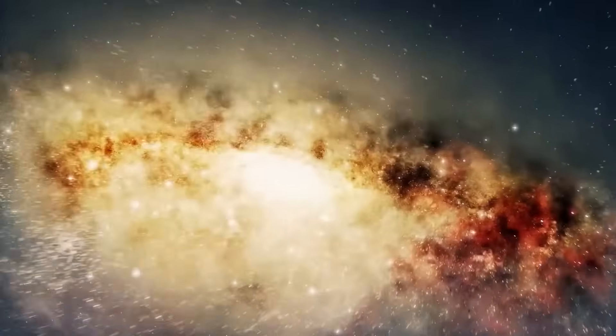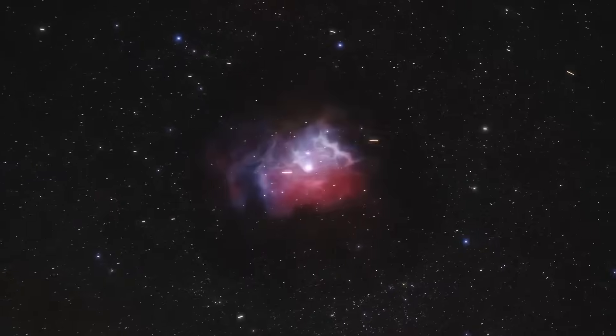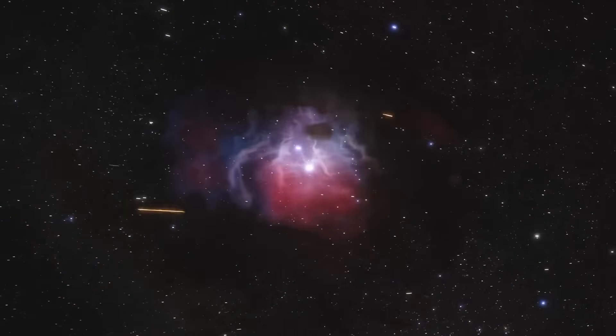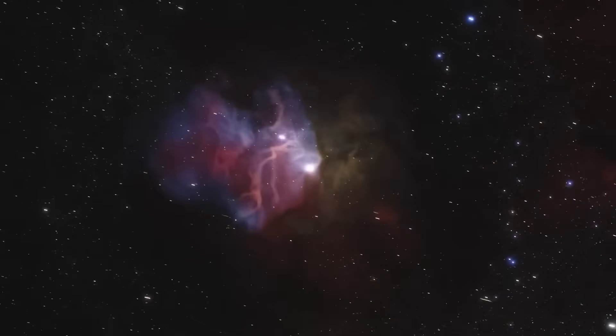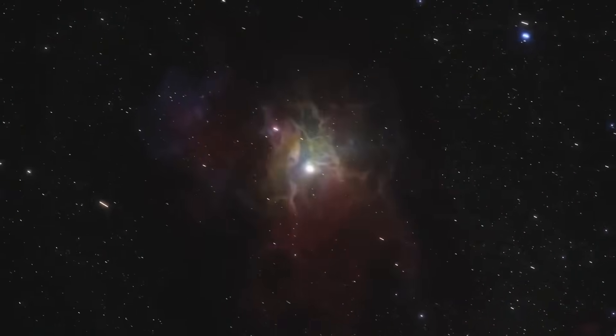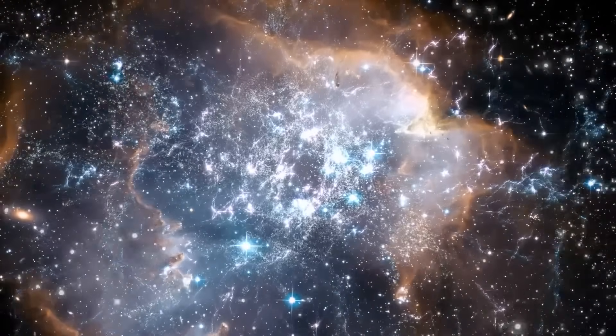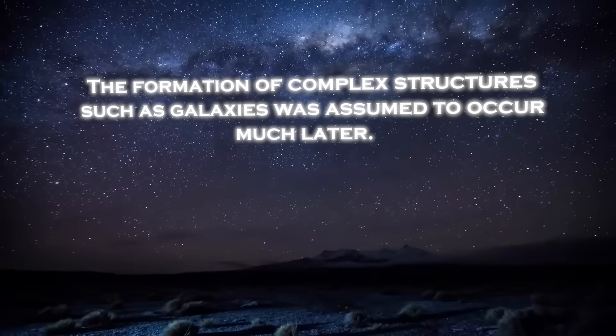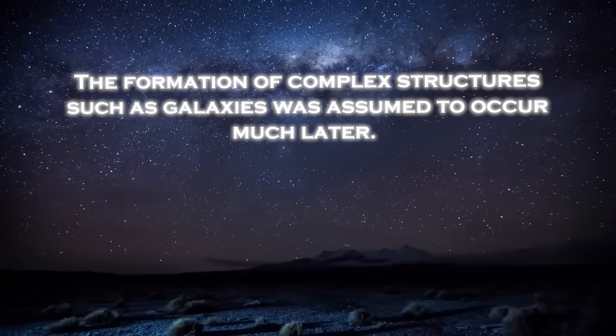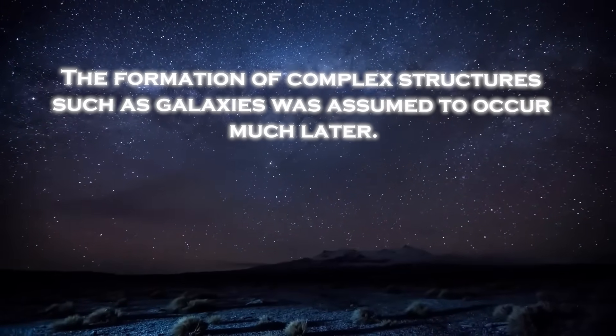The Big Bang theory tells us that the cosmos was a hot mess after the initial event. The first solid objects took hundreds of thousands of years to form and it took hundreds of millions of additional years for the objects to reach sufficient density and produce light. The formation of complex structures, such as galaxies, was assumed to occur much later.